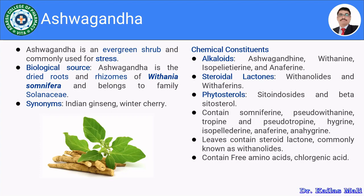Moving towards the chemical constituents of Ashwagandha. Ashwagandha mainly contains alkaloids, steroidal lactones, and phytosterols. Alkaloids include ashwagandhine, withanine, isopelletierine, and anaferine. Steroidal lactones include withanolides and withaferins. Phytosterols include sitoinosides and beta-sitosterol.